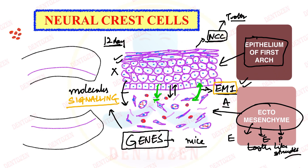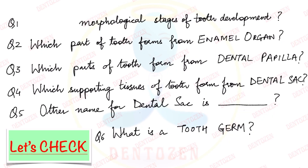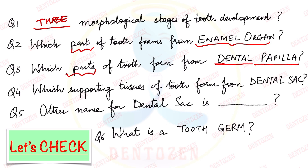In the coming videos, we are going to discuss each morphological stage in detail — bud, cap, and bell stage. For now, let's check what you have understood. First question: what are the three morphological stages of tooth development? Second: which part of the tooth forms from the enamel organ? Third: which parts of the tooth form from dental papilla (D and P)? Fourth: which supporting tissues form from the dental sac? Fifth: what is the other name for dental sac? And last: what is a tooth germ?